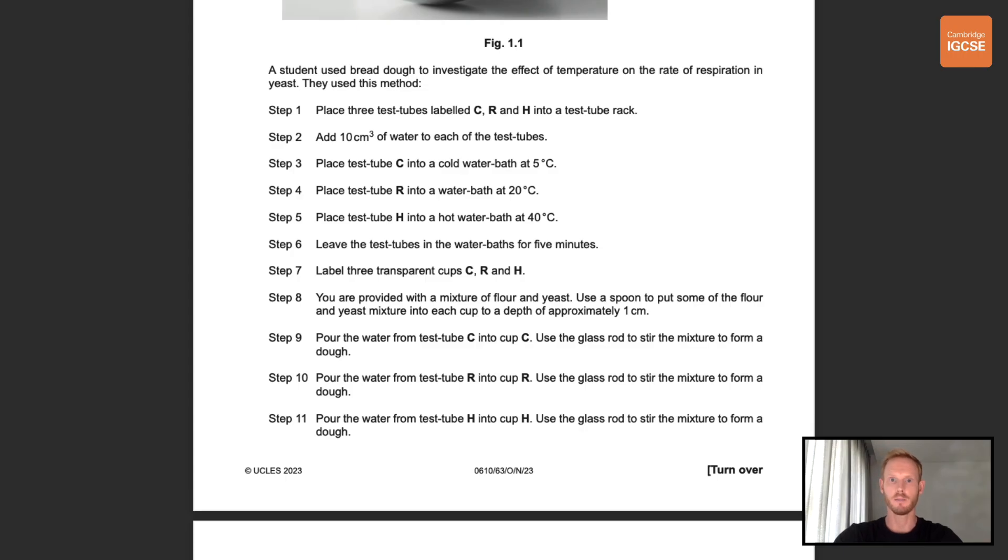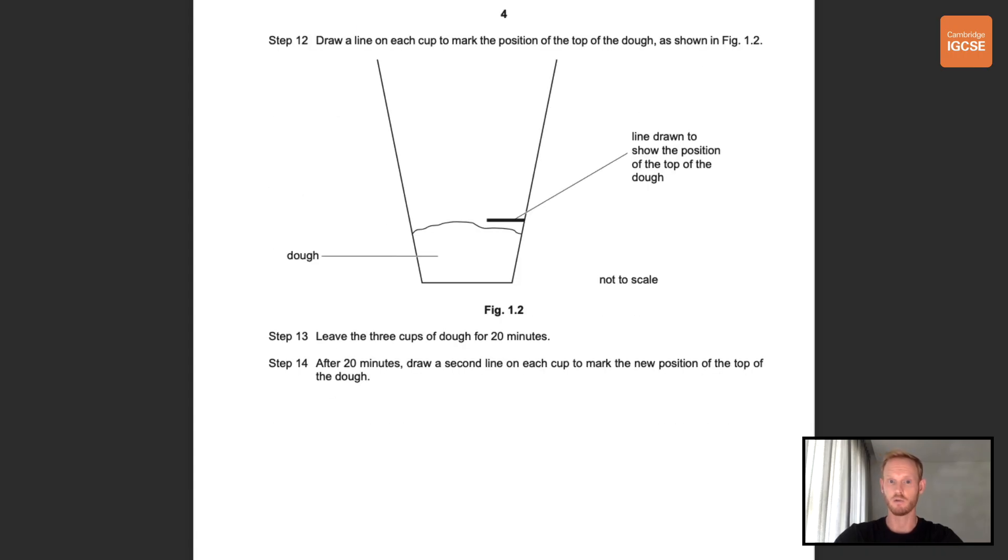They then labelled three transparent cups, C, R and H, corresponding to the three test tubes, and added flour and yeast mixture to each cup, up to a height of approximately one centimeter. They then poured the water from test tubes C, R and H into cups C, R and H, and stirred each with a glass rod to form a dough. So we have a dough made from cold water, one made with room temperature water, and one with warm water. They then drew a line on each cup to mark the position of the top of the dough, as shown in figure 1.2, left the cups for 20 minutes to allow the yeast to get to work, and finally drew a second line on each cup to mark the new position of the top of the dough.